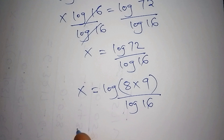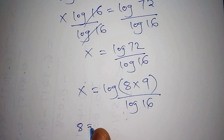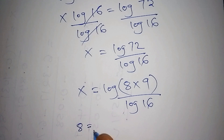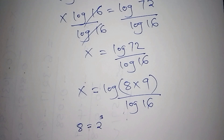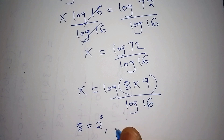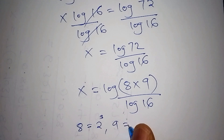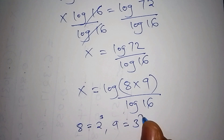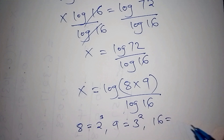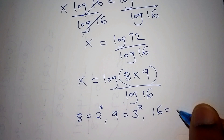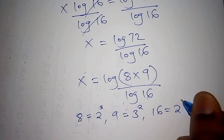For example, 8 expressed as an index number is 2 to the power of 3, because 2 times 2 times 2 is 8. When you have 9, it can be expressed as 3 to the power of 2. And 16 can be expressed as 2 to the power of 4.